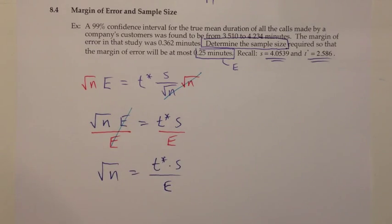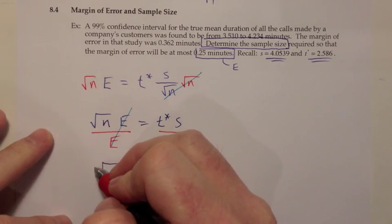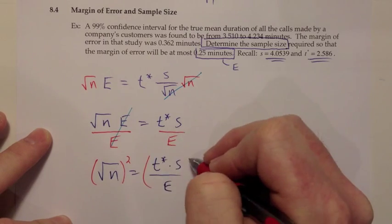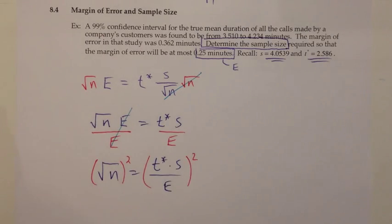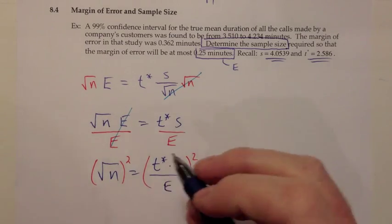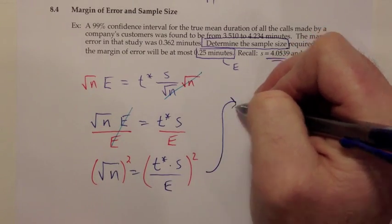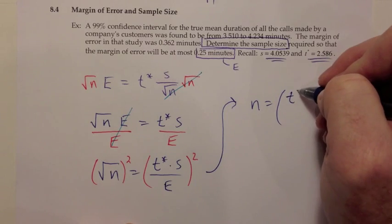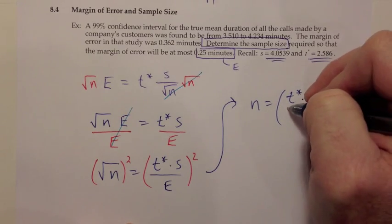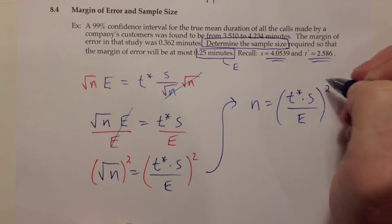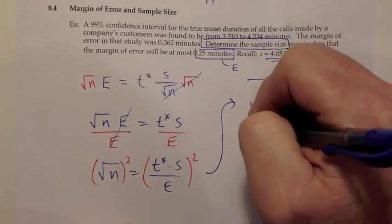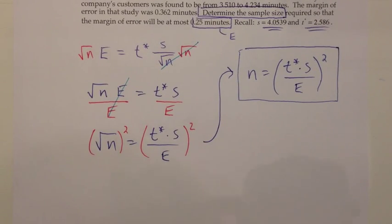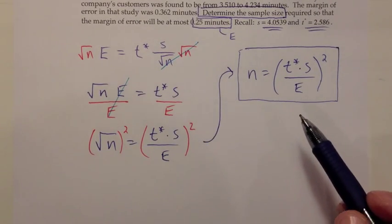The opposite of taking the square root of something would be to square it. So I would then square both sides, and the square and the square root would cancel. I would come up with a new formula, which is that N would be equal to T-star times S over E, and that would all be squared. That formula is the one that I want to use on this problem to work out what sample size I would need to get that margin of error they're requesting.